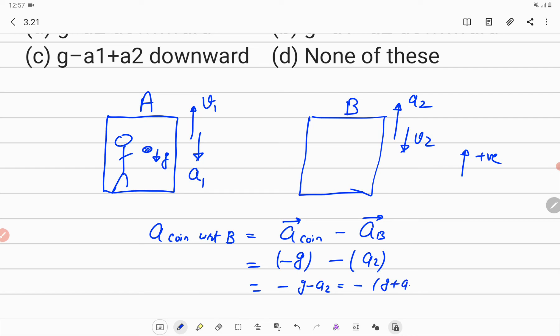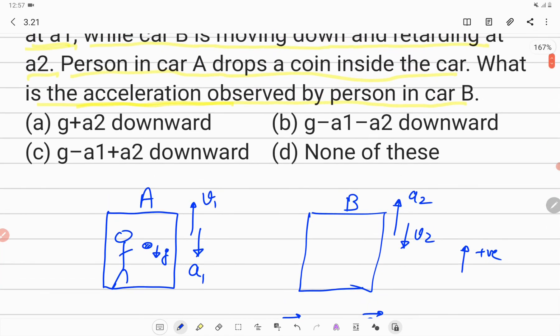Then G plus A2 in the positive direction, or I can write G plus A2 in the downward direction. So the acceleration of coin observed from car B is G plus A2 in the downward direction, which is given in option A.